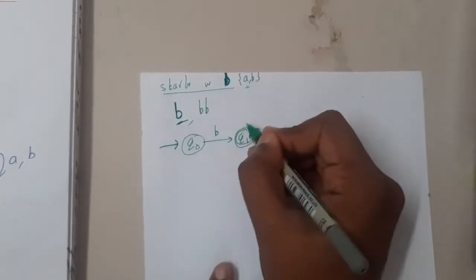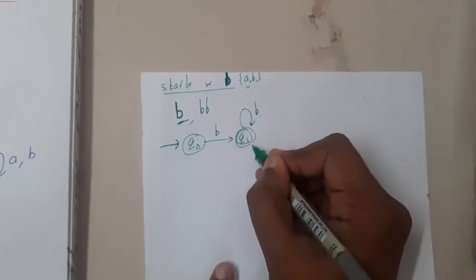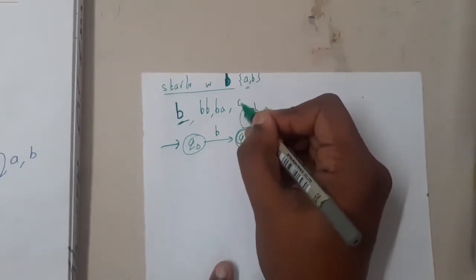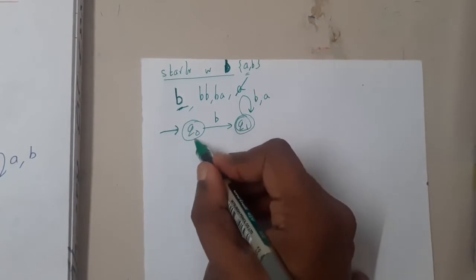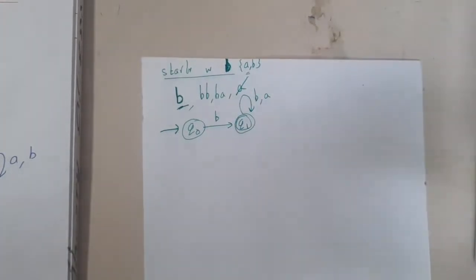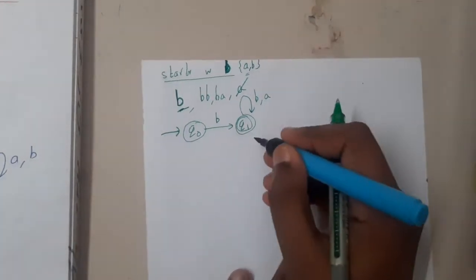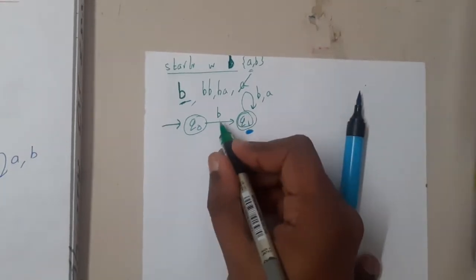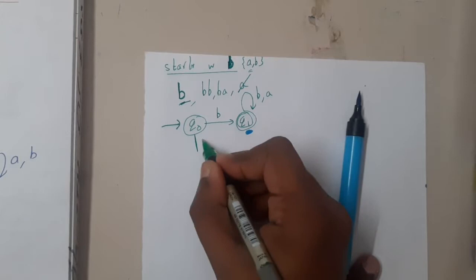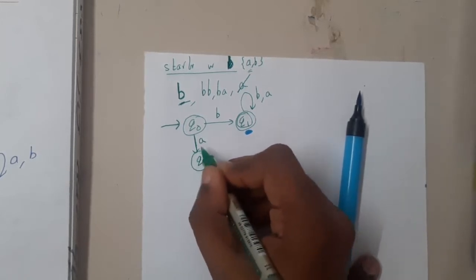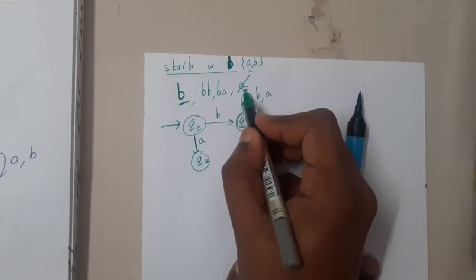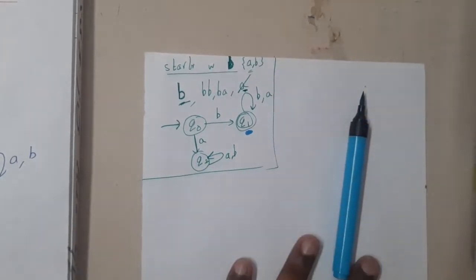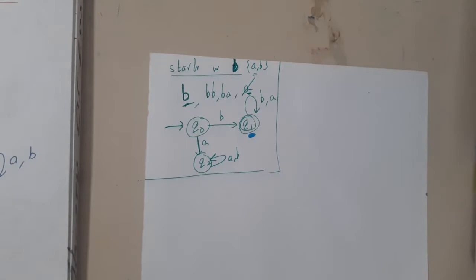Now 'bb' should also be possible, so I will make a loop here. 'ba' should also be accepted, so I add a loop there too. If a string starts with 'a' it should be rejected. Both alphabets are now handled for the final state. For this state, 'b' is available but 'a' is not, so for 'a' we go to a dead state q2 and loop there forever. This is the diagram for starting with 'b'.